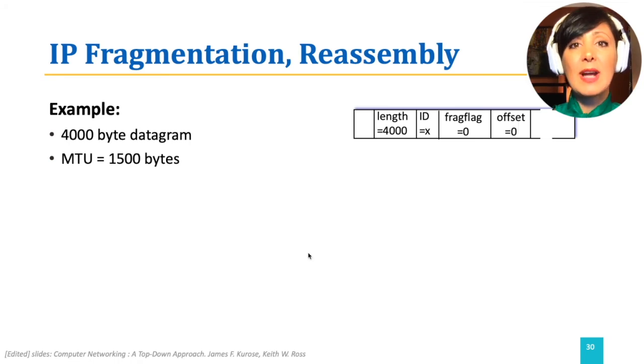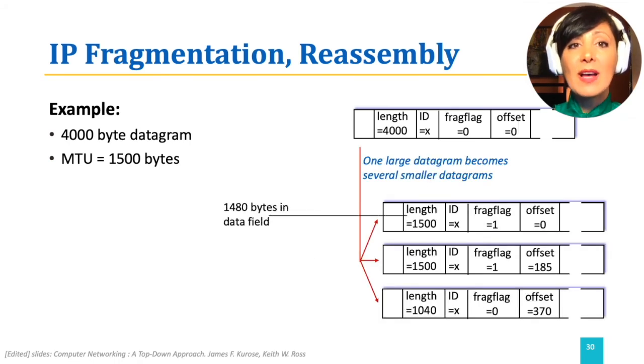The first datagram will have 1,480 bytes. Together with the 20 bytes of header, this will be a total of 1,500 bytes. This datagram will have the frag flag set to 1, signaling that it is fragmented. It will have the offset equal to 0 and datagram length set to the new value of 1,500.